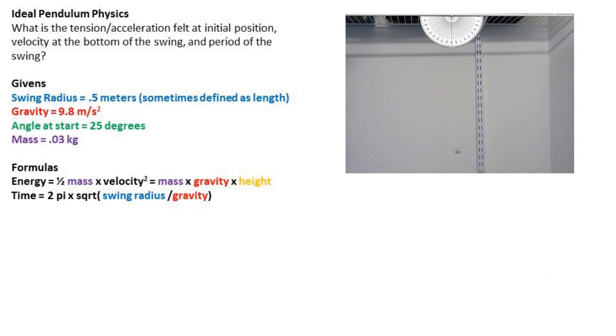To solve for the velocity of the swing and the period of the swing, we will be using three formulas. The formulas are as follows: Energy equals one-half mass times velocity squared, or energy equals mass times gravity times height.